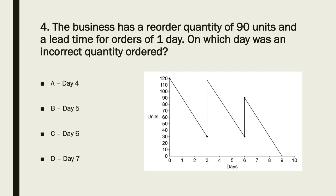The business has a reorder quantity of 90 units. On day 3, 120 minus 30 equals 90 — that's correct. But on day 6 they received only 60 units (90 minus 30), which is an incorrect quantity. Since the lead time was one day, it was ordered the day before day 6 — that's day 5. So the answer is B, day 5.